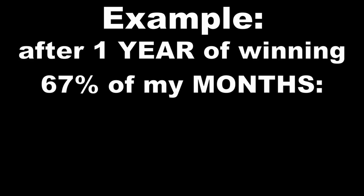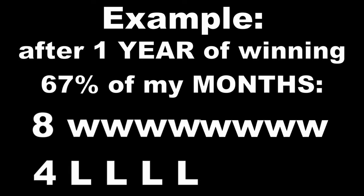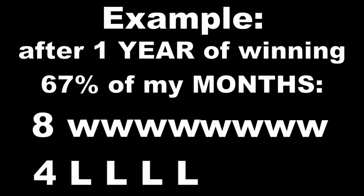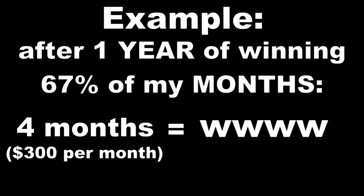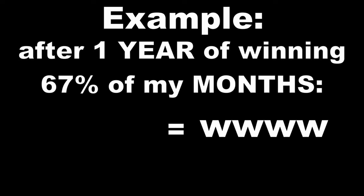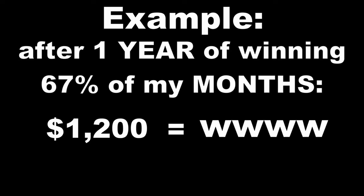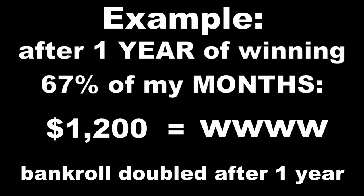But let's take it even further. Let's say that after a year, I had 8 months where I won 60% of 30 days, and 4 months where I lost 60% of 30 days. This means I would have 4 months of profits at $300 a month, which equates to $1,200 after a year. In this example, I doubled my bankroll, and it took me a year to do it. This is how you should approach sports betting.